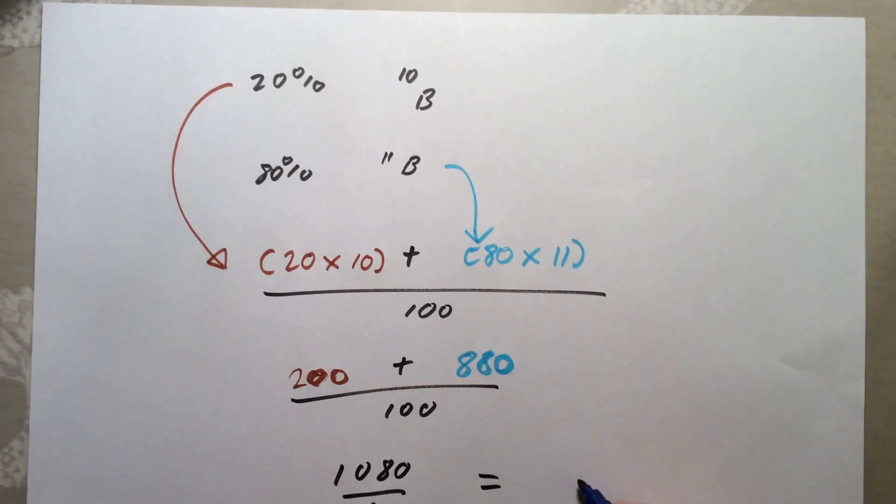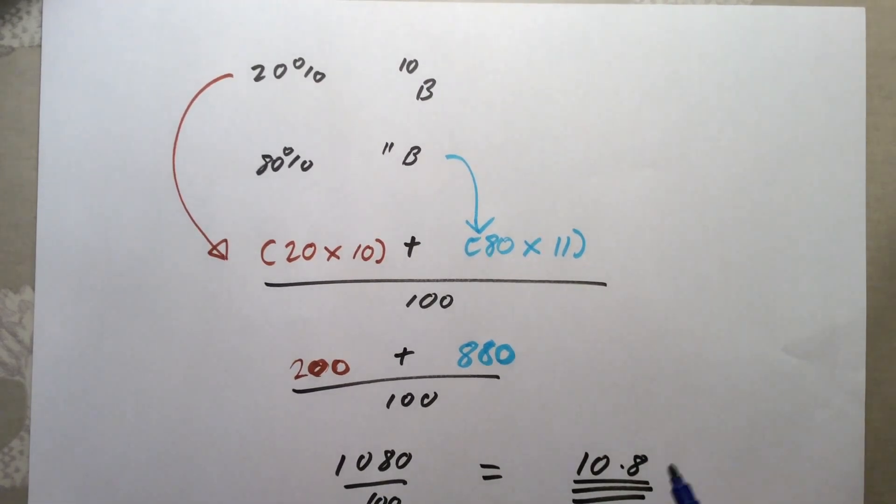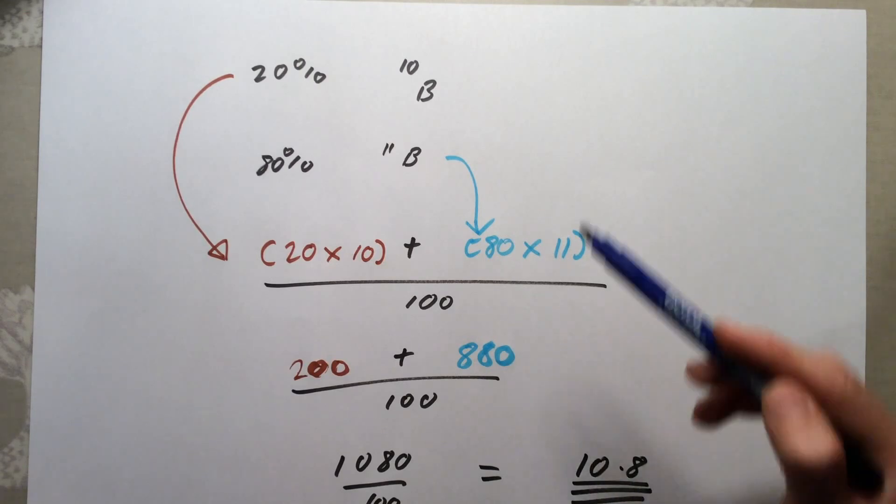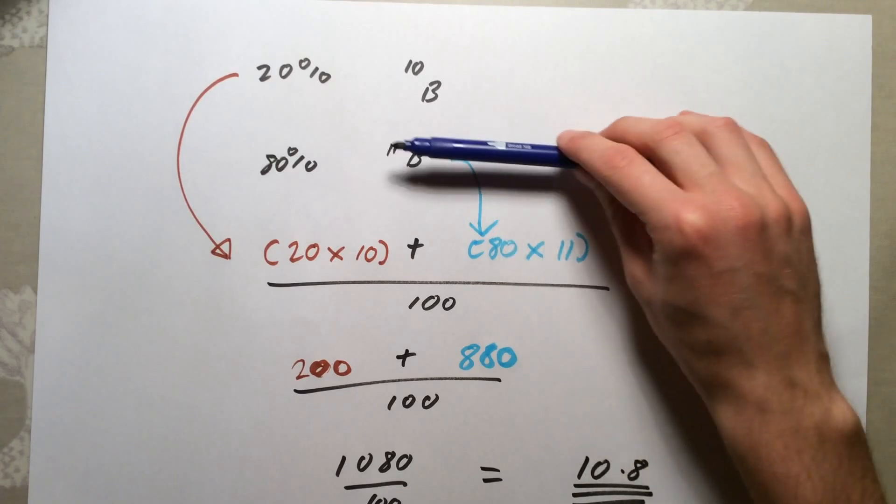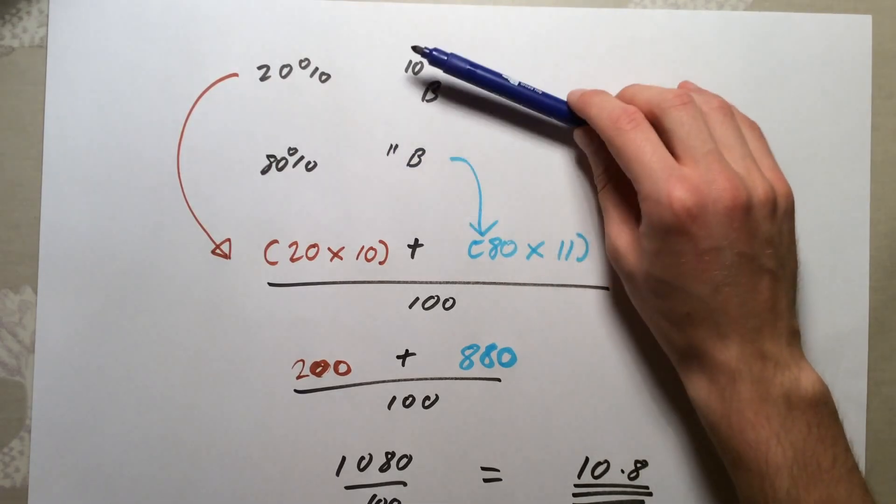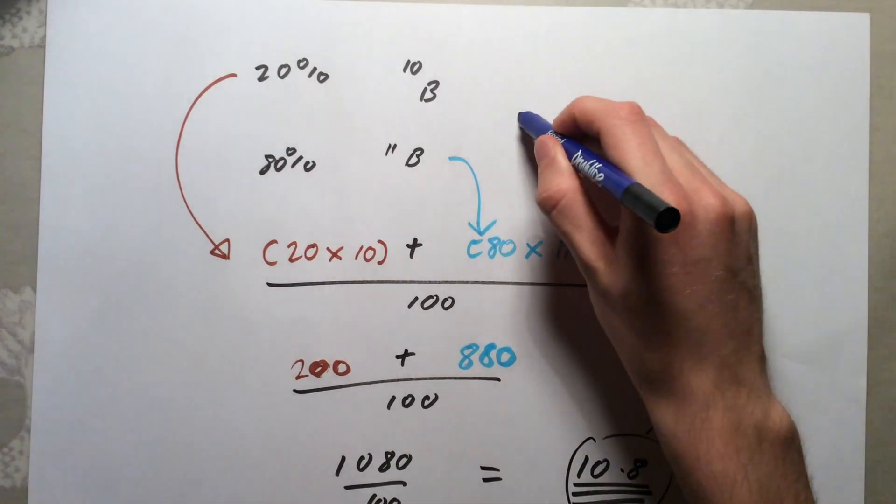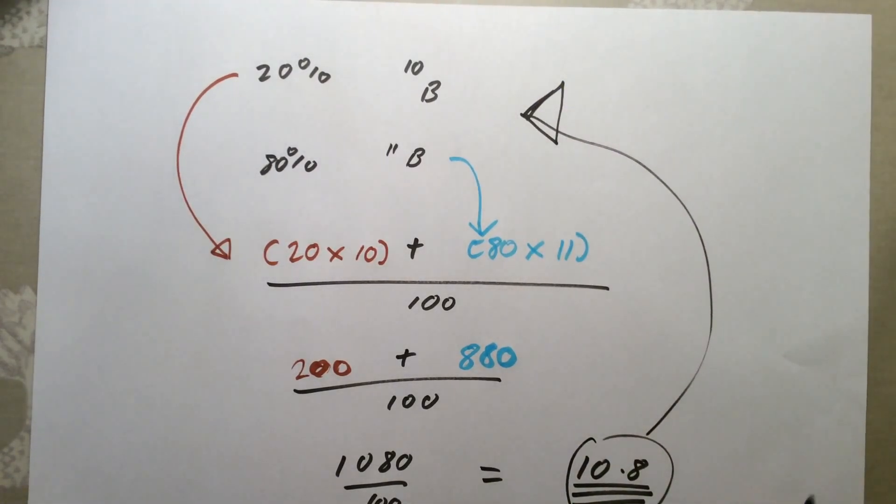Whenever you do these, it is very logical and wise to look back at the question you started with. Does my answer make sense? 10.8 here, that's well four-fifths the way between 10 and 11. If you look at your question, you are told that you have got 80%, four-fifths of this 11B, and only one-fifth or 20% of 10B. Therefore this answer makes sense. Always try and link it back to what you start with, and you can basically self-mark your answer. That to me makes sense.